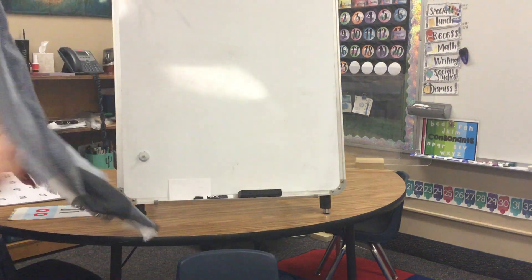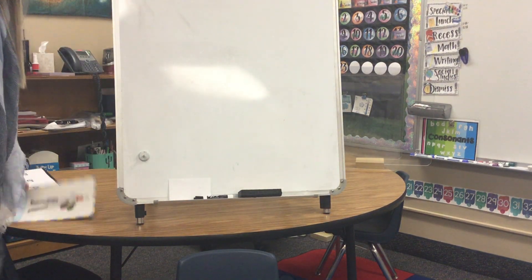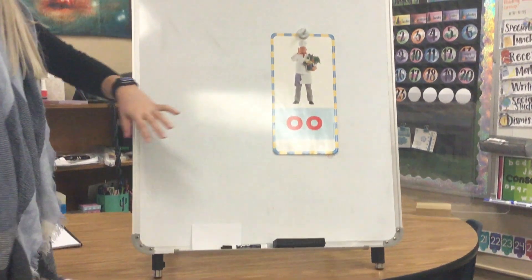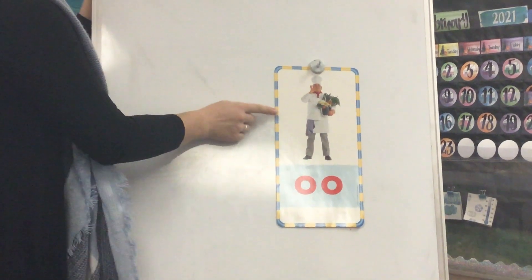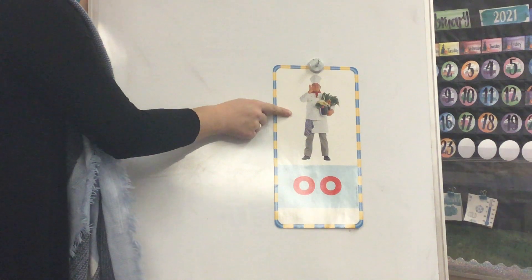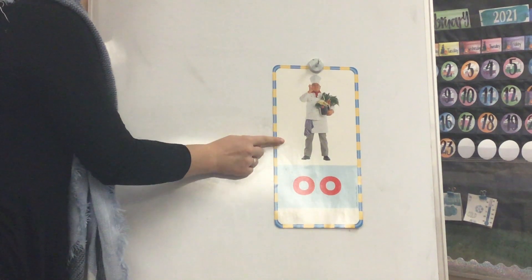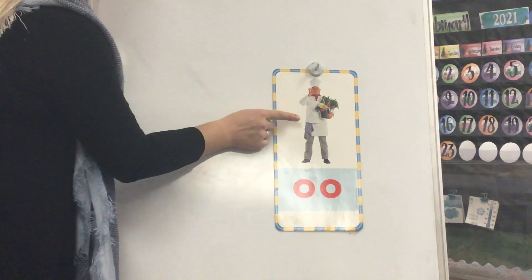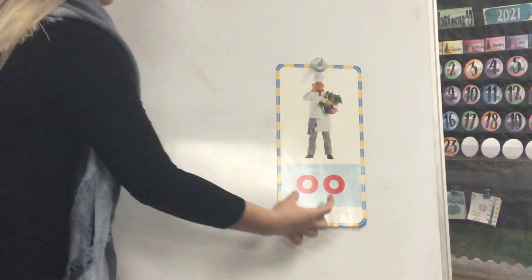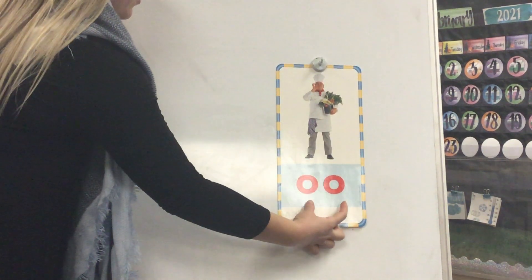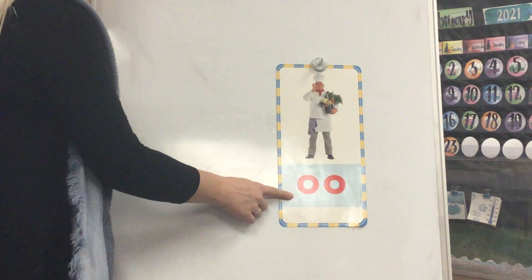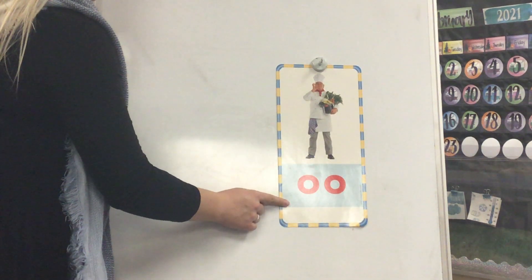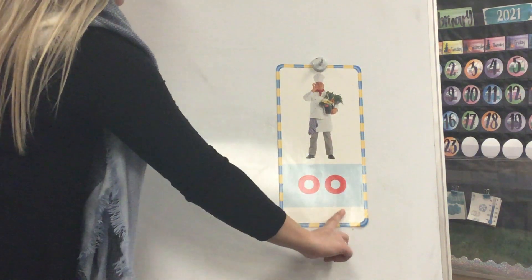We have a new sound spelling to talk about today. This is a picture of a cook. The vowel sound we hear in cook is /uh/. Your turn: picture — cook — sound — /uh/. My turn: spelling — O-O. Your turn: spelling — O-O.